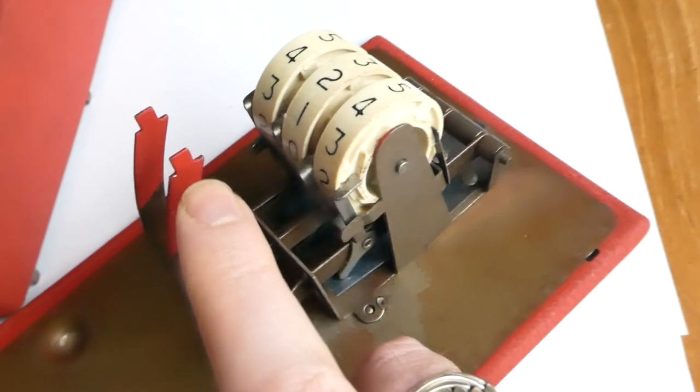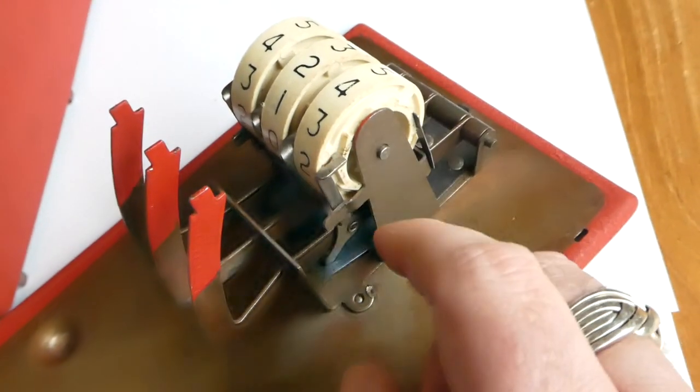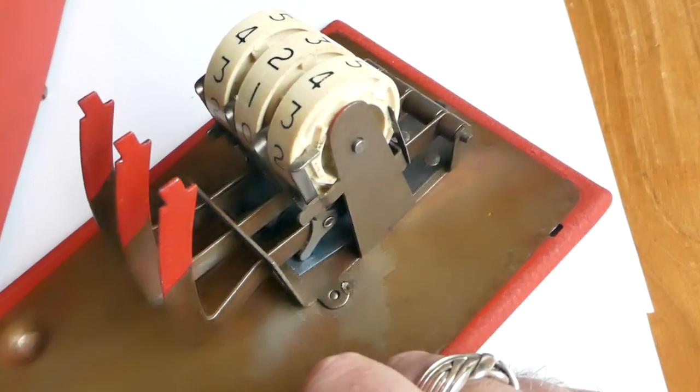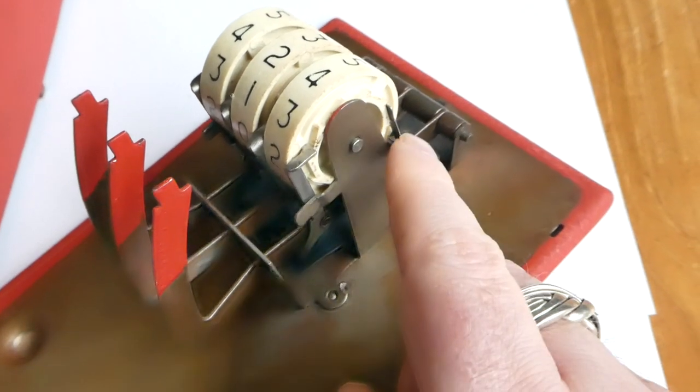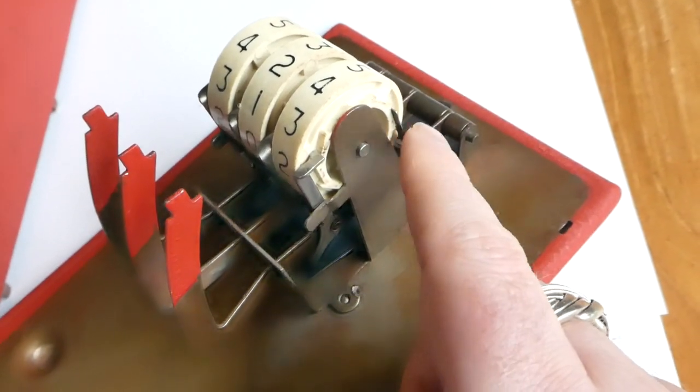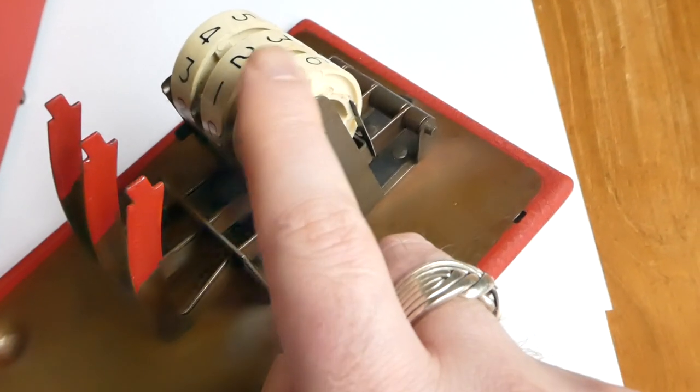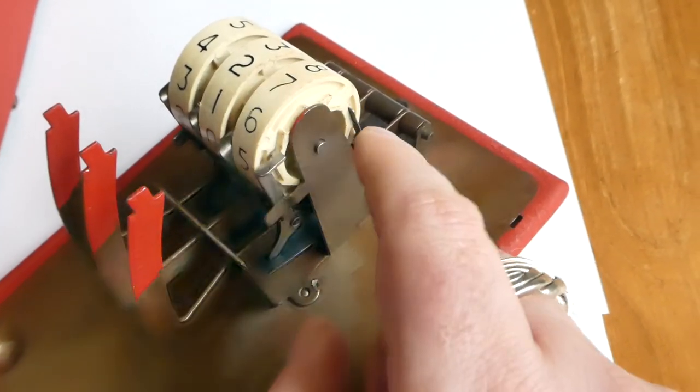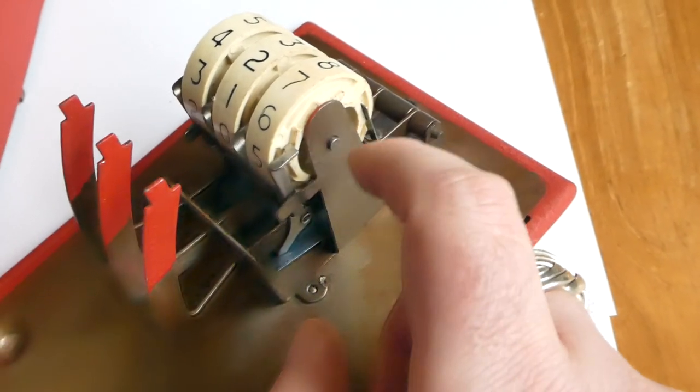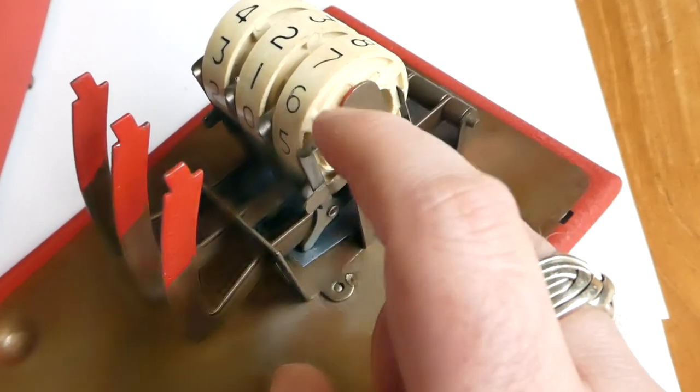Each button moves a wheel through this straightforward latch mechanism. At the back is a leaf spring that ensures the wheel cannot move backwards but only forwards. It uses this sawtooth gear on the side.